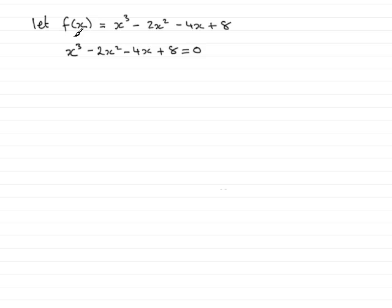Now, in this particular question we're asked to solve the cubic equation x cubed minus 2x squared minus 4x plus 8 equals 0.